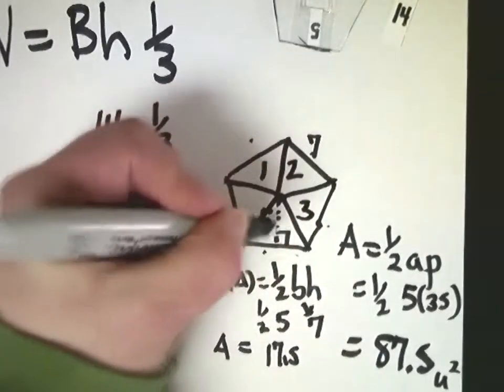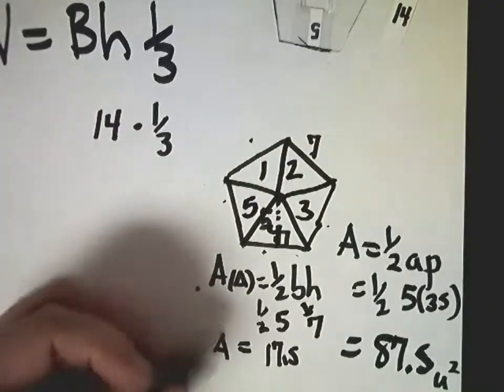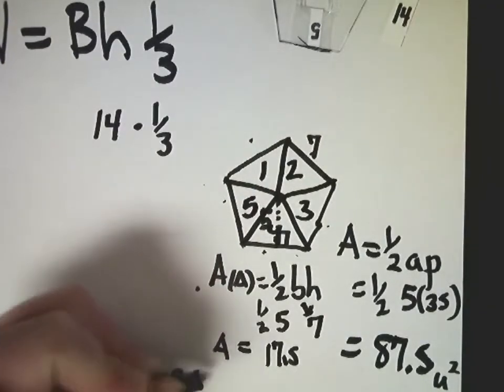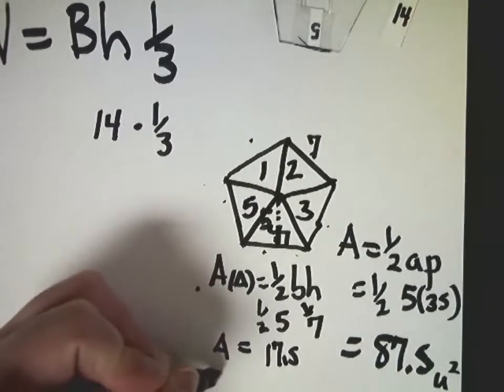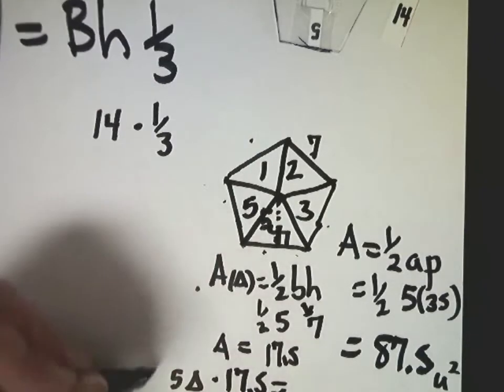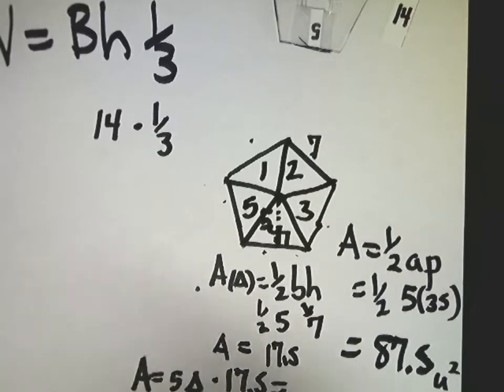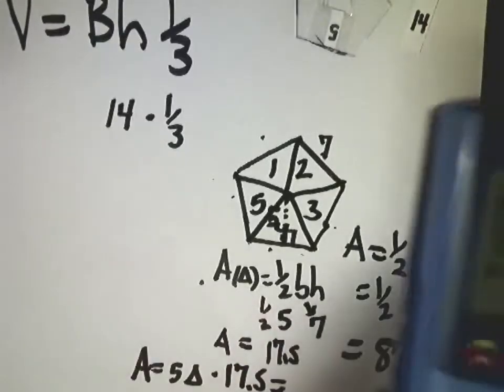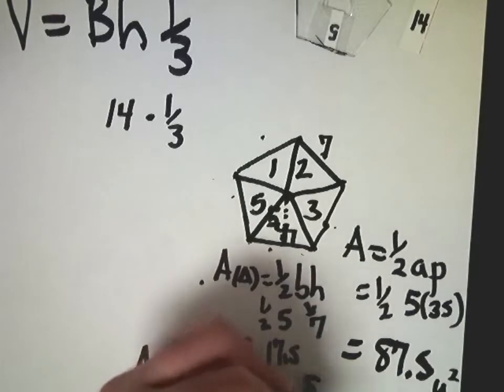Now, you can count one, two, three, four, five of those triangles. So if there are five triangles, and each one of those triangles is 17.5, then your total area of the figure would be 87.5. What a surprise.